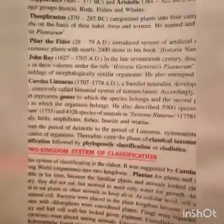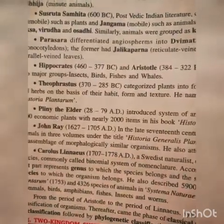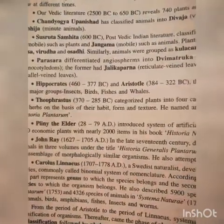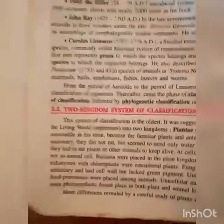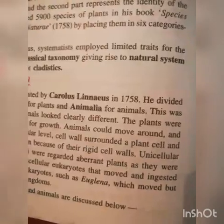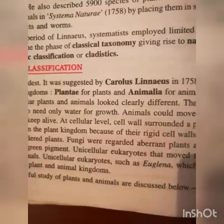Let us discuss the two kingdom classification system. Though the history of classification is not asked in board exams, questions from this part may appear in NEET or various competitive exams, so this information is being provided. The two kingdom system of classification is the oldest; it was suggested by Carolus Linnaeus in 1758. He divided living organisms into two kingdoms: Plantae for plants and Animalia for animals.